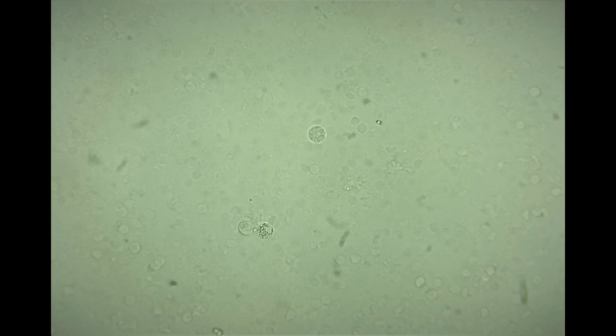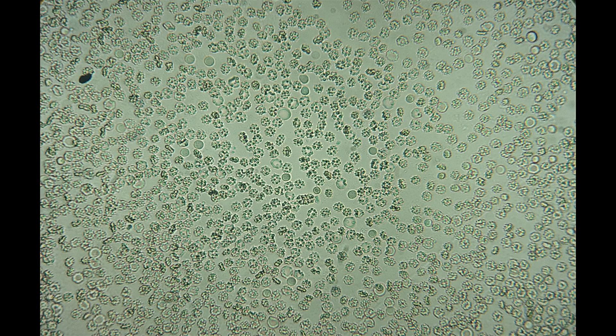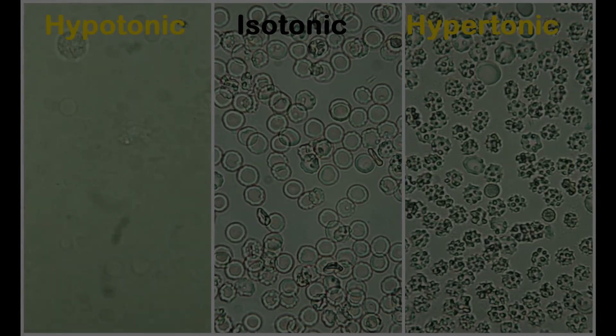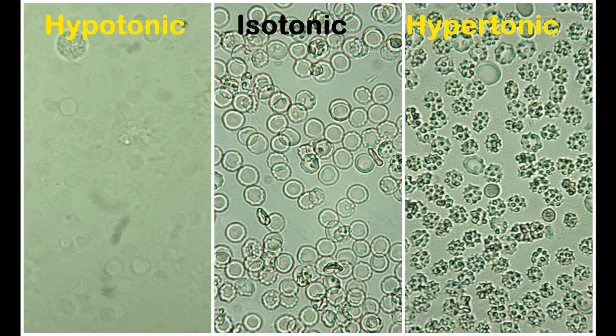The RBCs exposed to the hypotonic solution become swollen to such an extent that many of them could no longer retain their cellular integrity and have ruptured. The slide shows a murky appearance with only a few swollen cells visible. These ruptured RBCs are commonly referred to as RBC ghosts. In the slide containing the hypertonic solution, RBCs shrink in size and exhibit a phenomenon known as RBC crenation, wherein the cells exhibit a spiky appearance on their surfaces. This simple demonstration shows the effect of solutions of varying solute concentration on cells.